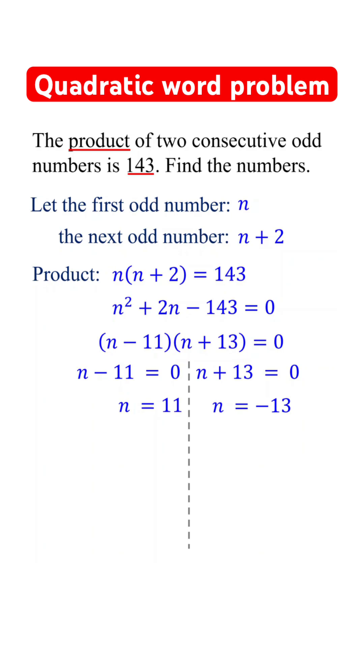Since there are two values of n that are solutions, it will give us two pairs of consecutive odd numbers. When n is 11, the next odd number is 11 plus 2, which is 13.